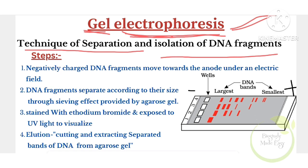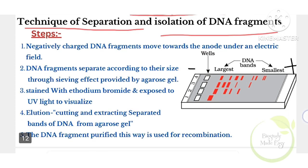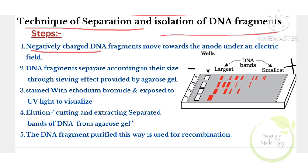Let us see the steps in gel electrophoresis. First, DNA fragments are negatively charged. When we apply electricity, the negatively charged DNA fragments are attracted toward the positive side. The positive electrode is called the anode, and the negatively charged DNA moves toward it.